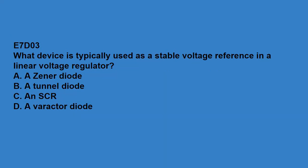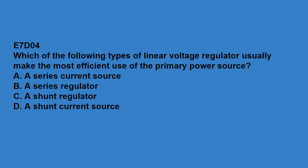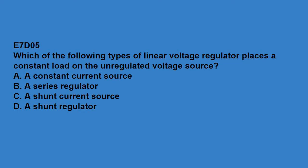E7D03, what device is typically used as a stable voltage reference in a linear voltage regulator? That is a Zener diode. E7D04, which of the following types of linear voltage regulator usually makes the most efficient use of the primary power source? That is a series regulator. E7D05, which of the following types of linear voltage regulator places a constant load on the unregulated power source? That is a shunt regulator.